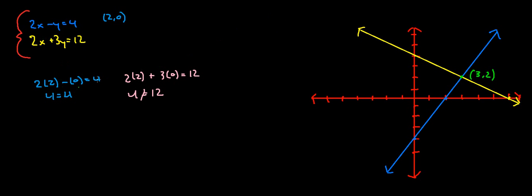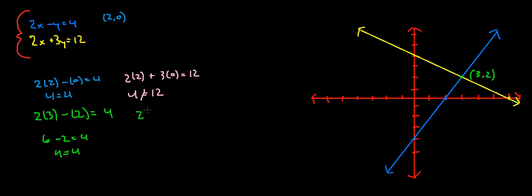If I put (3, 2) into the first equation: 6 minus 2 is equal to 4, so 4 is equal to 4 — a true statement. And if I put (3, 2) into the second equation: 6 plus 6 is equal to 12, so 12 is equal to 12 — also a true statement.